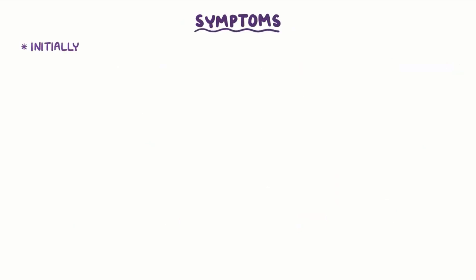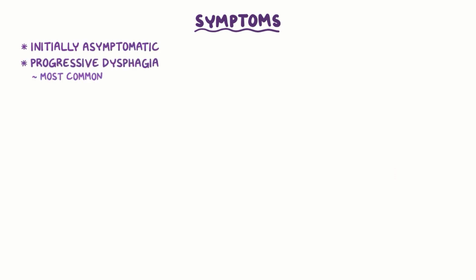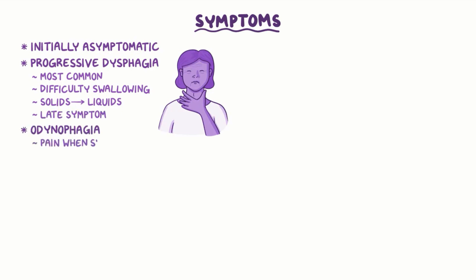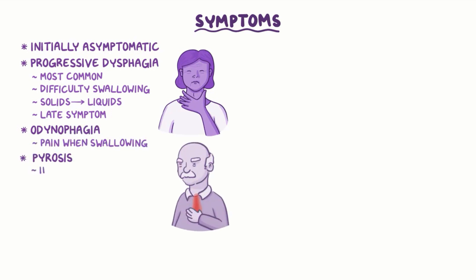Initially, esophageal cancer is asymptomatic, but once it progresses, the most common symptom is progressive dysphagia, which means difficulty swallowing. At first, dysphagia is specific to solid foods, but as the disease progresses, liquids are also hard to swallow. Unfortunately, this is a late symptom. Other symptoms include odynophagia or pain when swallowing, pyrosis which is heartburn, pain in the chest or back, vomiting, and weight loss.